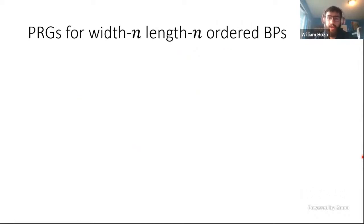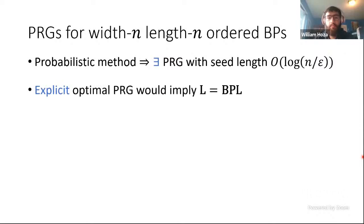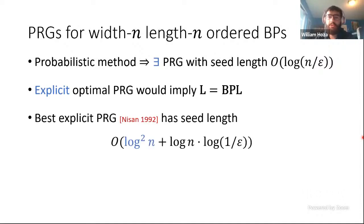One of the most important parameters of a branching program is the width — the number of vertices per layer — which measures the space complexity of this computational process. The most important case is width-n length-n ordered branching programs. A simple probabilistic method argument shows there exists a pseudorandom generator for width-n length-n programs with seed length log(n/epsilon). We would like to design explicit pseudorandom generators with the same seed length, which would imply L equals BPL, the de-randomization of space-bounded computation. Unfortunately, the best explicit construction is still Nisan's generator from 30 years ago, with seed length roughly log^2(n) plus log(n) times log(1/epsilon).